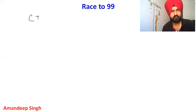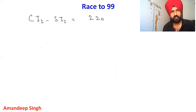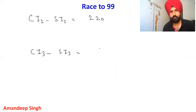The compound interest for two years minus simple interest for two years gives a gap of Rs. 220. The compound interest for three years minus simple interest for three years gives a gap of Rs. 671.